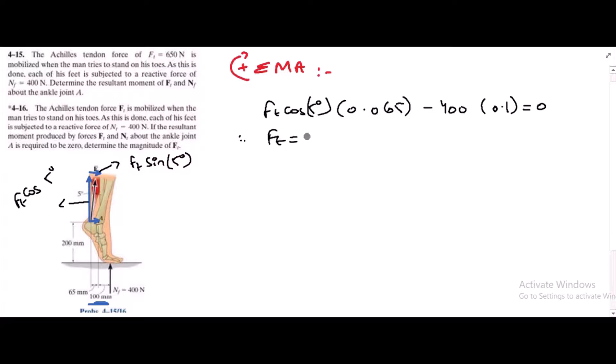Ft is given which is 650 newtons. The combined moment or the resultant moment about point A of all these forces is equal to 650 cos 5 degrees into 0.065 minus 400 into 0.1, which equals 2.089 newton meters. This is the answer to problem 4-15.